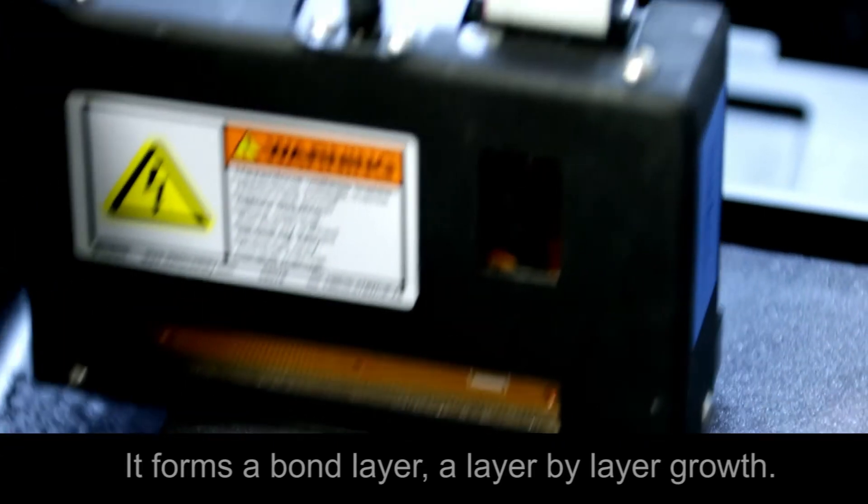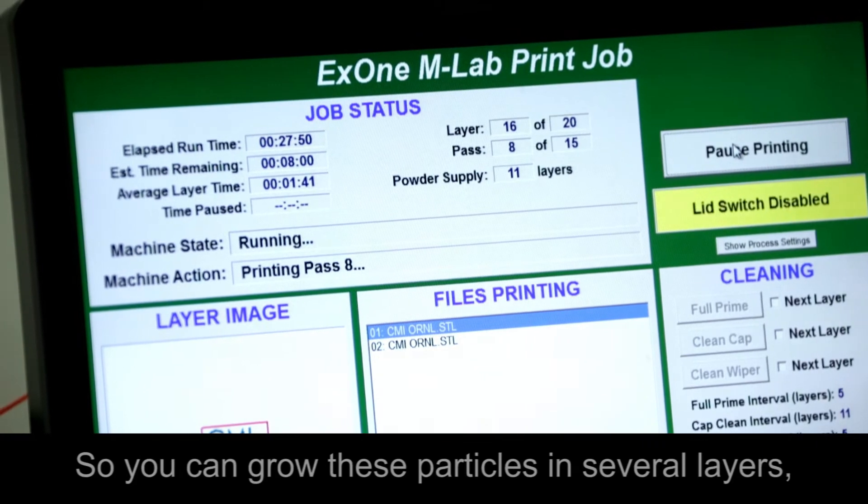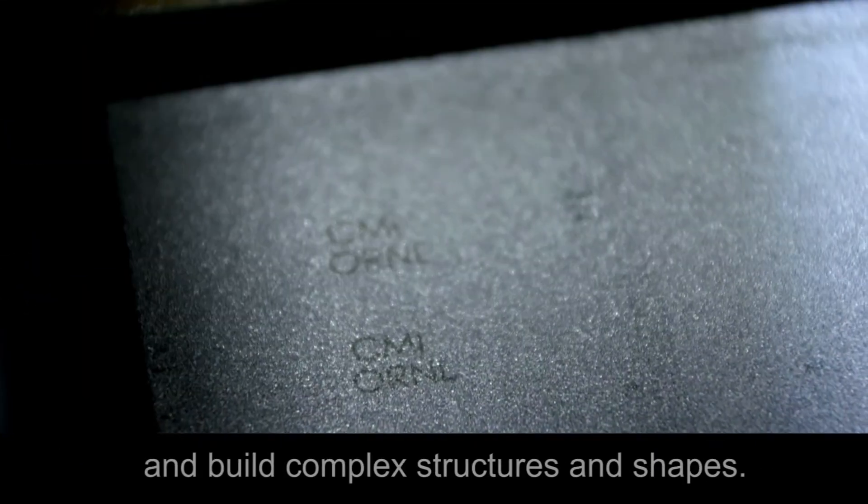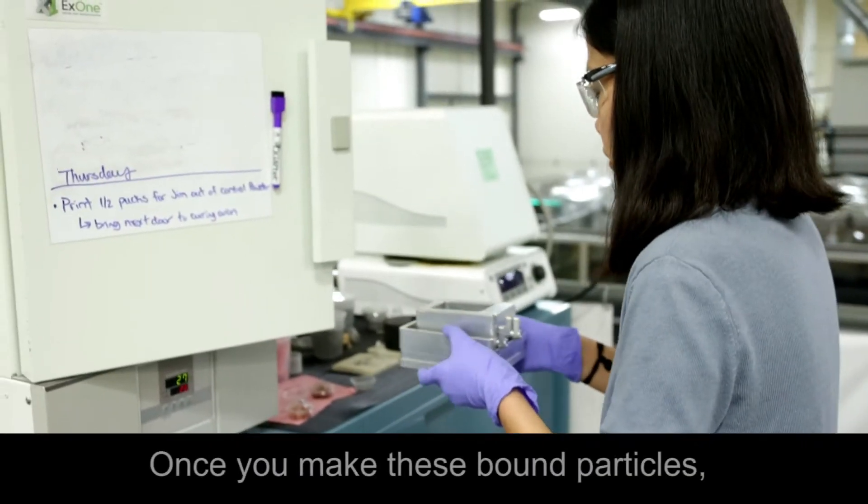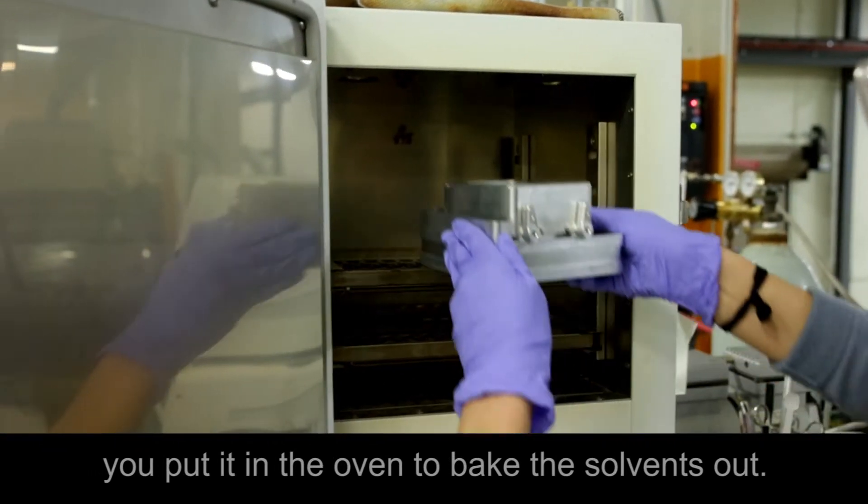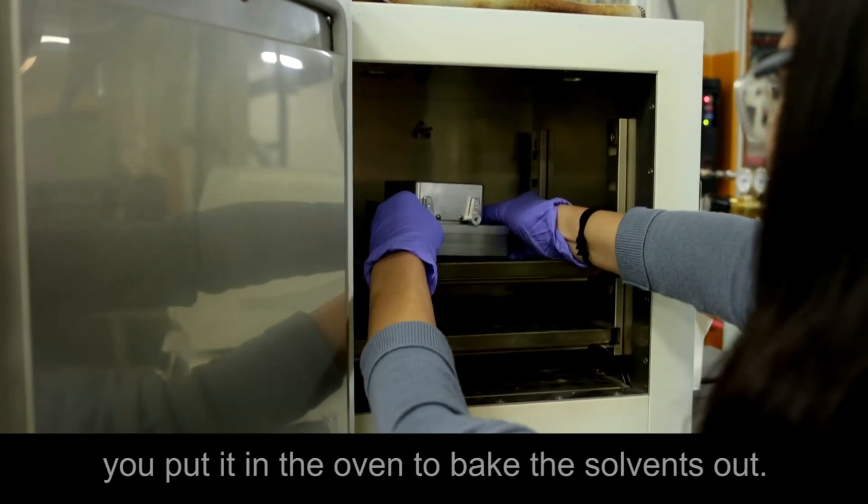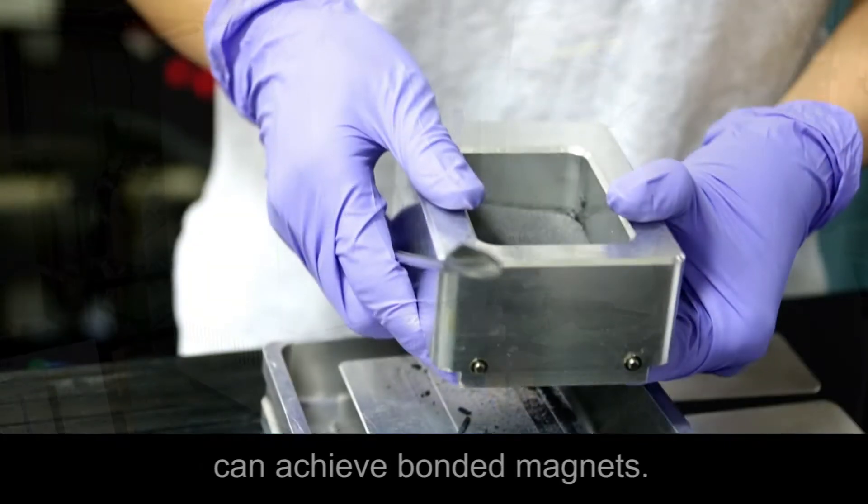It's a layer-by-layer growth process. You can grow several layers and build complex structures and shapes. Once you make these bound particles, you put them in the oven to bake the solvents out. Then you can remove the excess powders and achieve the bonded magnets.